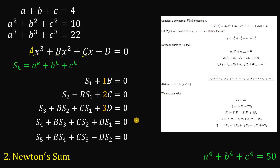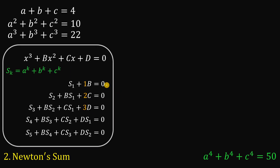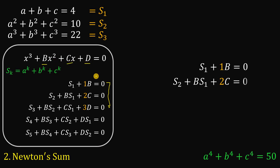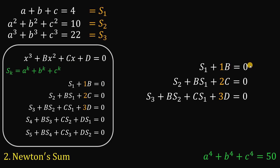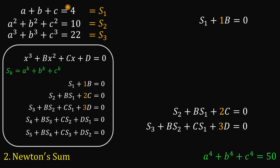We will use Newton's Sum to answer this question. We just need the first three equations. Here, a plus b plus c is s sub one, a squared plus b squared plus c squared is s sub two, and a cubed plus b cubed plus c cubed is s sub three. Using the first Newton's Sum equation, s₁ plus b equals 0. We know s₁ equals 4, so 4 plus b equals 0, giving b equals negative 4. We now have the coefficient of x squared.